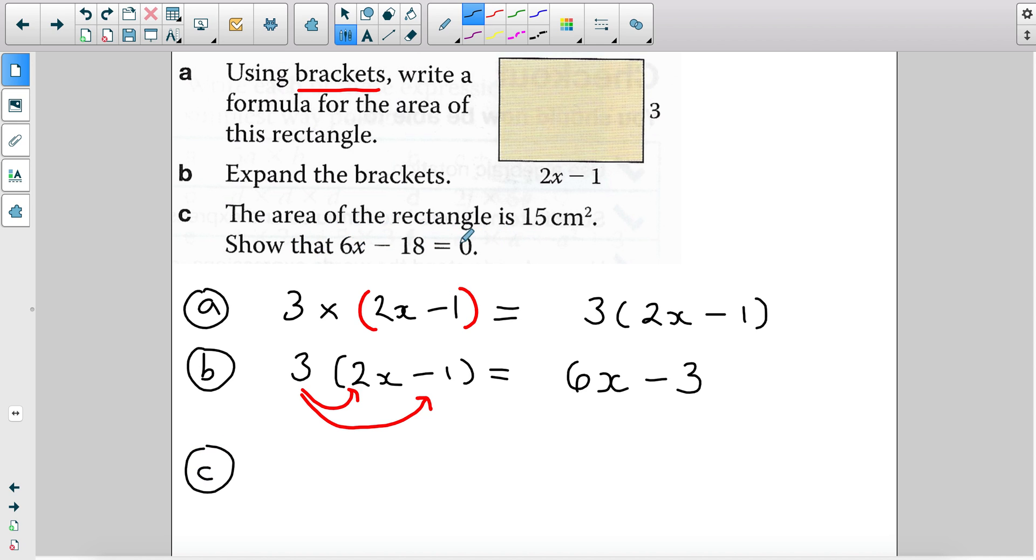Now it says the area of the rectangle is 15 centimeters squared. Show that 6x minus 18 equals 0. With questions that involve show that, it might be a bit confusing as to how you should start the question and how you should end it. So always start with what you know right now. Well, we know that this represents the area of the rectangle and what they're telling us is that the area is 15. So I know that the area is represented by 6x minus 3 and this should be equal to 15.